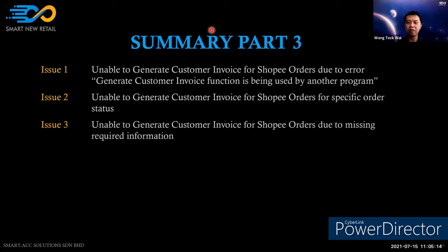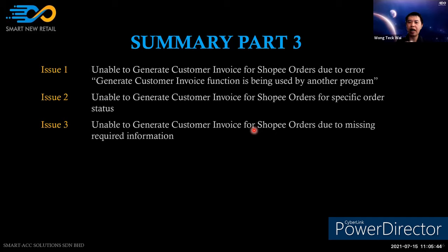Question: if you run the unlock script while the generate invoice function is still running, will it cause duplicate orders? Yes, it will. That is why you must ensure the process manager and Dynamo are not running any generate invoice function before running the script. Then reopen the process and generate the invoice.